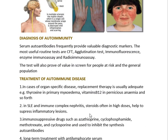Moving to diagnosis: how can we diagnose whether an autoimmunity disorder is present? Serum autoantibodies frequently provide valuable diagnostic markers. The most useful routine tests are the complement fixation test (CFT), agglutination test, immunofluorescence test, enzyme immunoassay like ELISA, and radioimmunoassay. These tests are useful as routine tests to identify autoimmunity disorders and can screen people at risk in the general population.